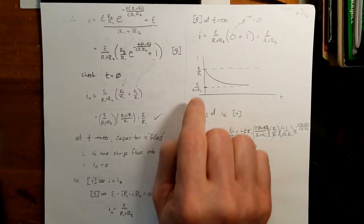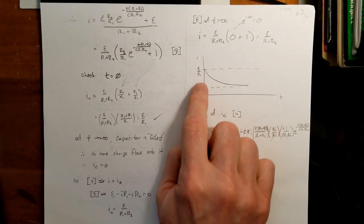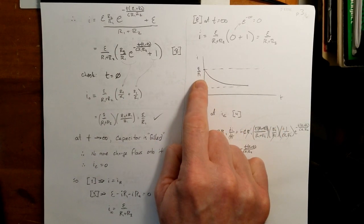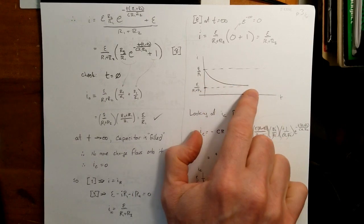So therefore, my current equation, or my current plot, would start out at epsilon over R1, and eventually goes to epsilon over R1 plus R2.